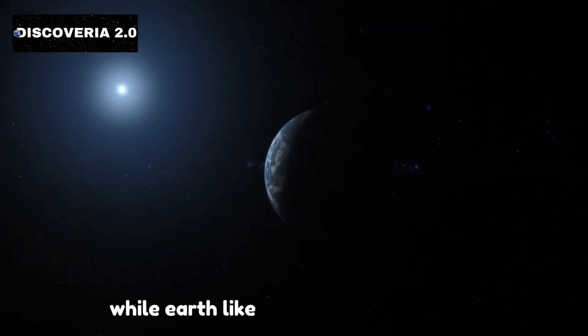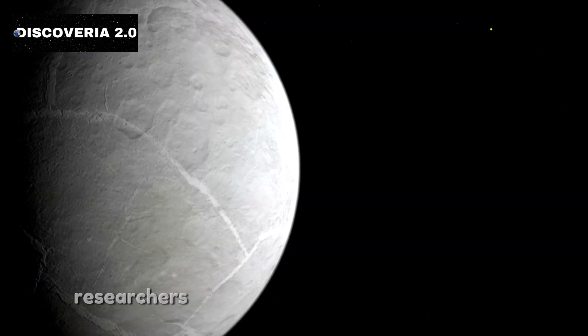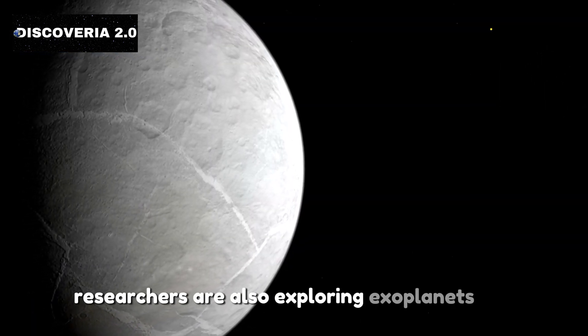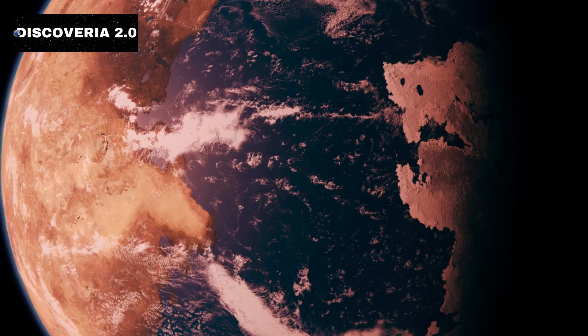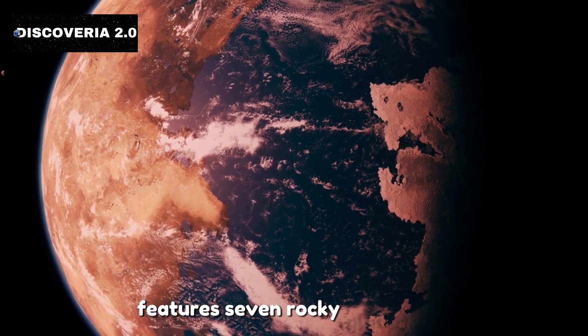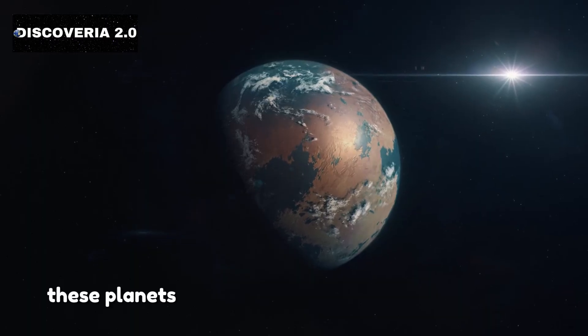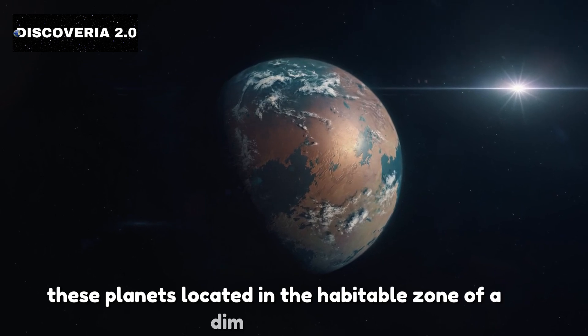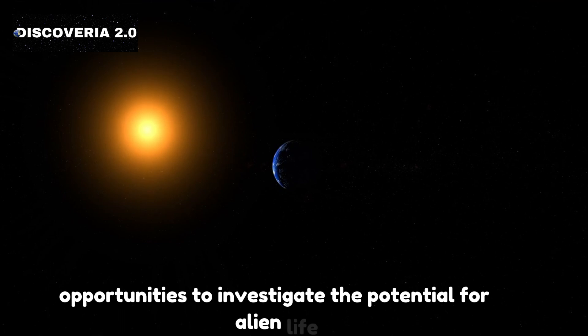While Earth-like planets around sun-like stars are prime candidates for study, researchers are also exploring exoplanets orbiting red dwarfs, which are abundant across the universe. The TRAPPIST-1 system, for example, features seven rocky planets, three of which may have liquid water. These planets, located in the habitable zone of a dim red dwarf, offer unique opportunities to investigate the potential for alien life.